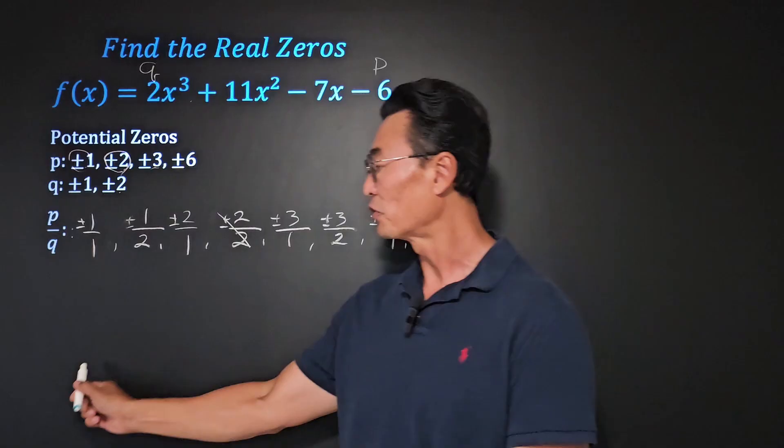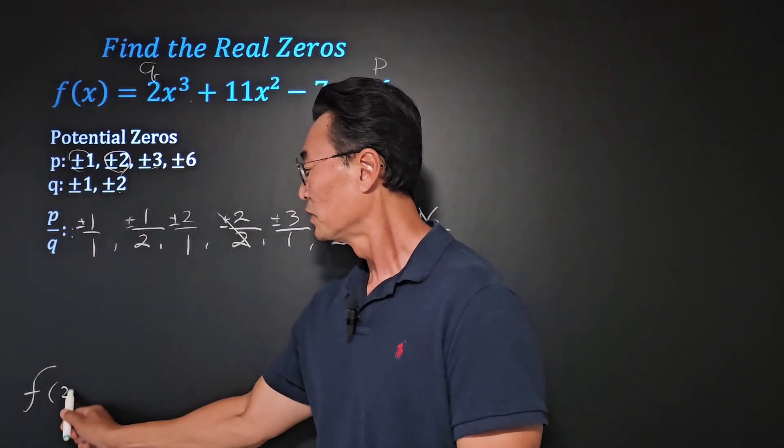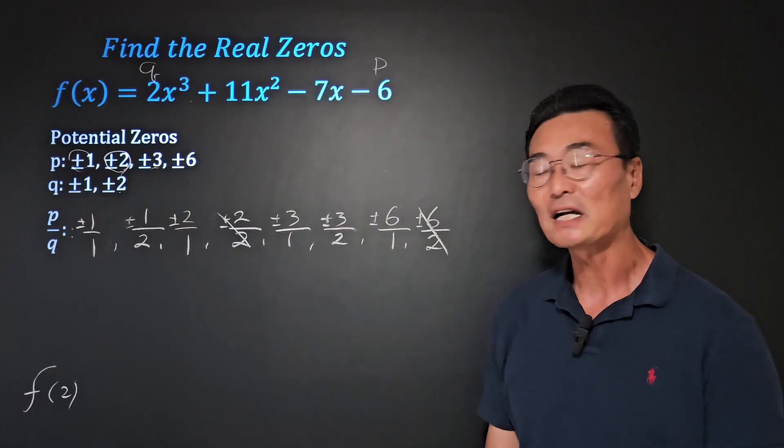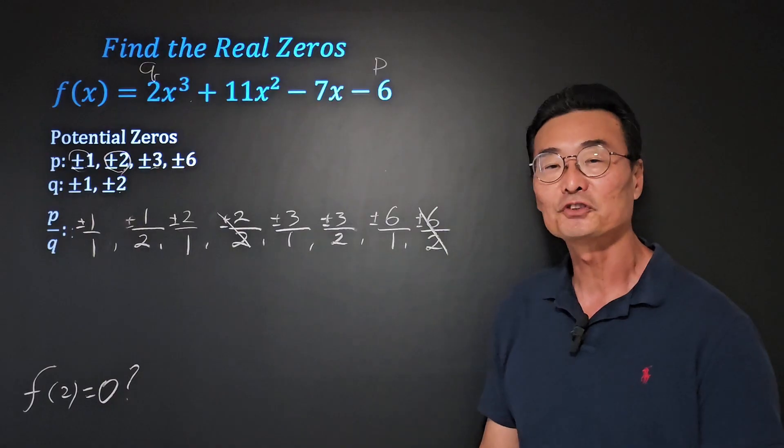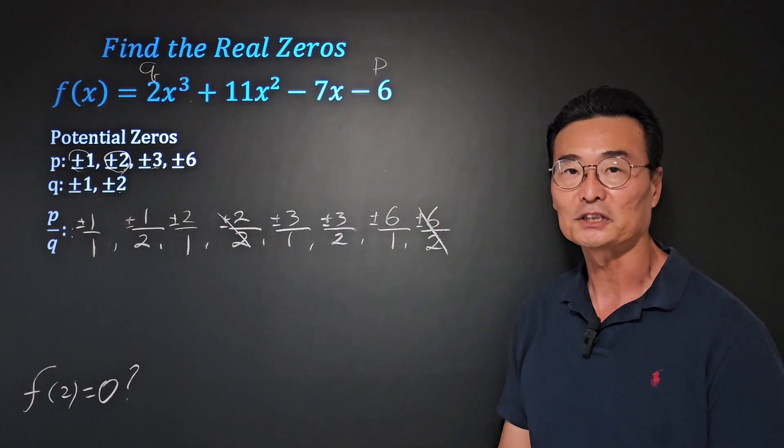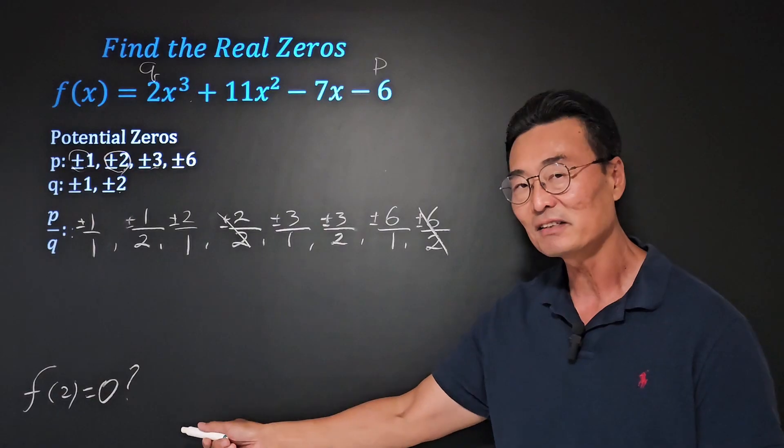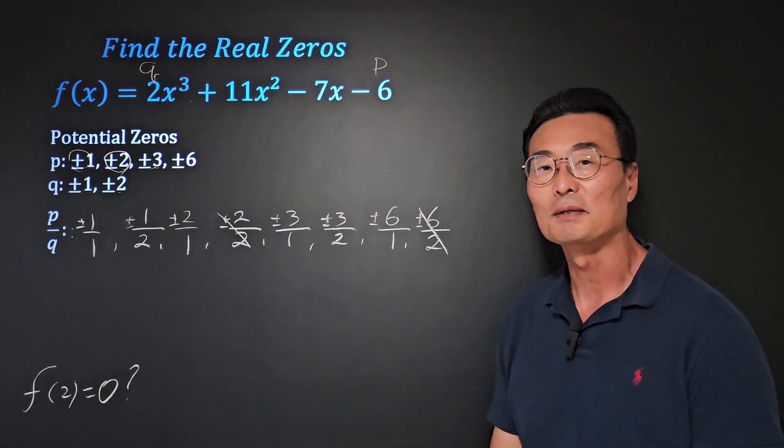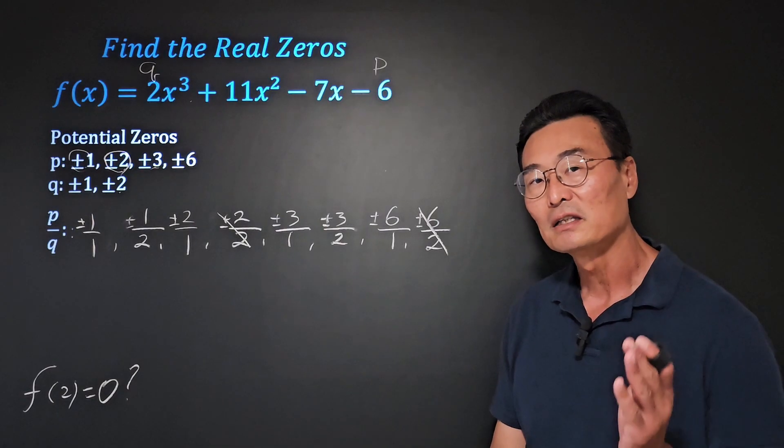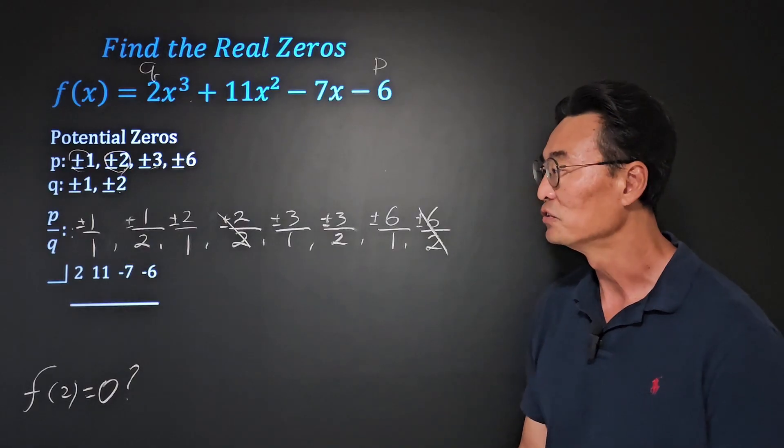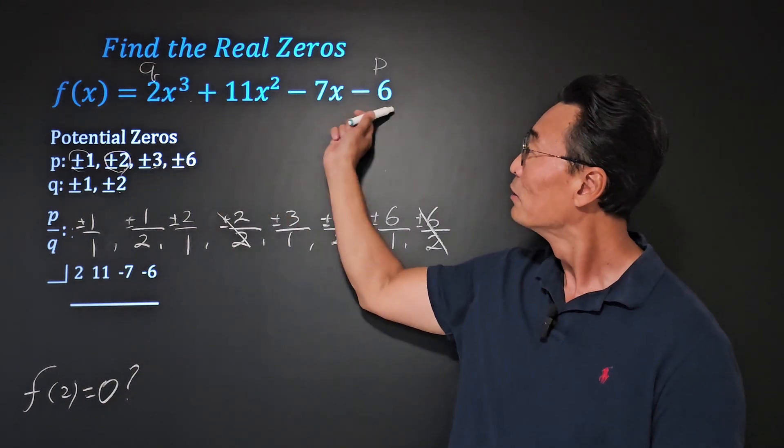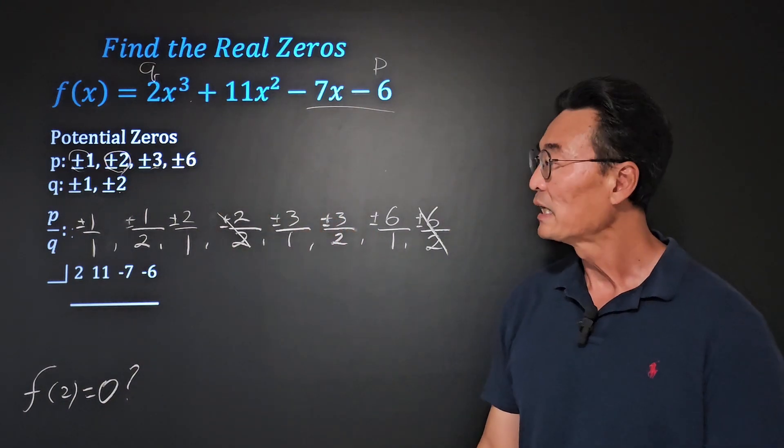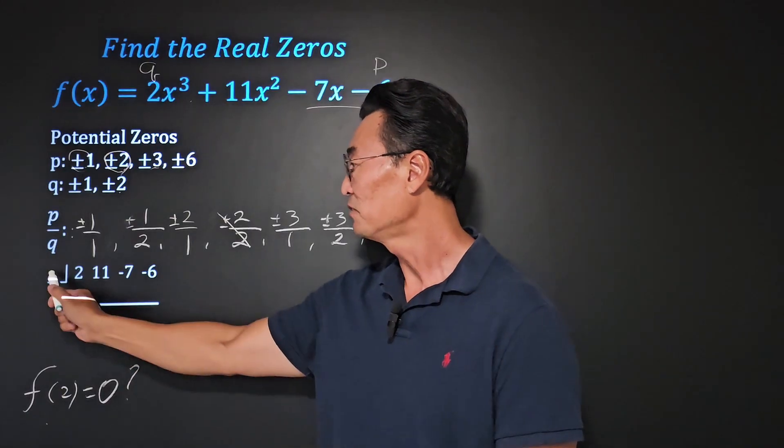We could either, for example, take the 2, plug it into the function to find out if it gives us a 0 to determine if 2 is a zero of the function. However, this could get tedious and take too much time. So instead, we want to use the synthetic division method. To do that, we go ahead and list 2, 11, negative 7, negative 6 from the function, and then we'll pick a number such as 2 right here and continue with the synthetic division process.